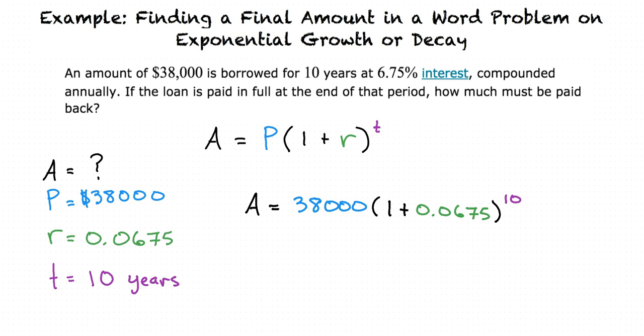After making this calculation, the final answer is a equals 73,023.46. If we round the answer to the nearest dollar, it is $73,023.